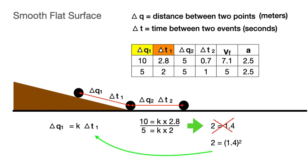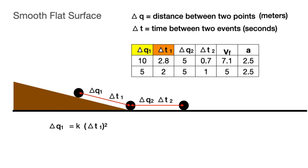Let's take that information and propose a new equation. Delta q sub 1 equals k times delta t sub 1 squared. We can plug in the data from both experiments and get an estimate for k. Notice that k appears to be pretty darn close to one-half of the acceleration a.